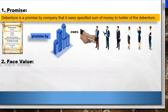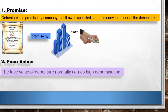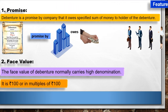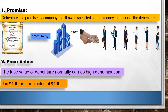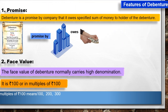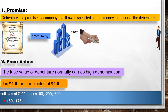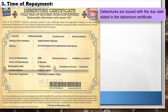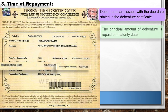2. Face Value: The face value of a debenture normally carries a high denomination — it is ₹100 or in multiples of ₹100 (i.e., 100, 200, 300, etc.). 3. Time of Repayment: Debentures are issued with the due date stated in the debenture certificate. The principal amount of the debenture is repaid on the maturity date.